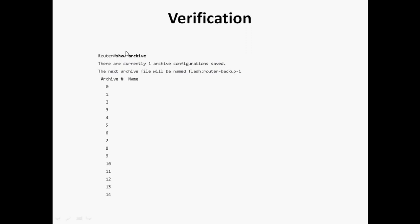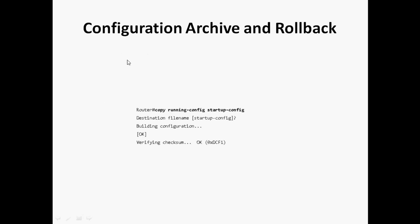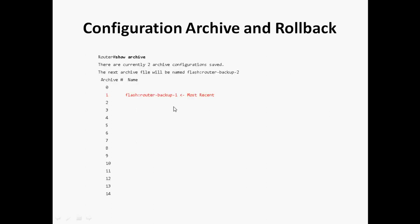After configuring Configuration Archive, check with 'show archive' in privileged mode — this shows how many backup configuration files are stored. Right now nothing is stored. Next, run 'copy running-config startup-config' or 'write' to save the configuration, which will trigger a backup.